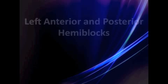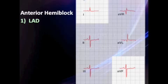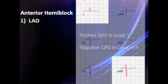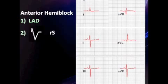For an anterior hemi block, number one, you must have left axis deviation — and it's actually quite significant, oftentimes greater than negative 45 degrees. And number two, you get a little R wave and deep S wave, which can sometimes also be widened, in leads 2, 3, and AVF.